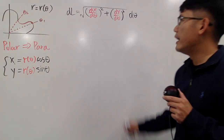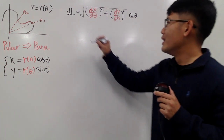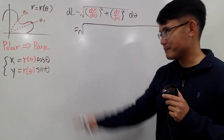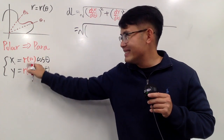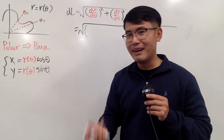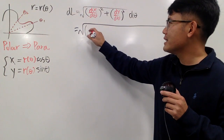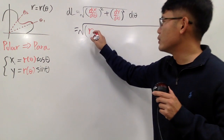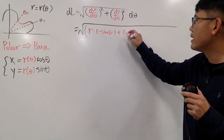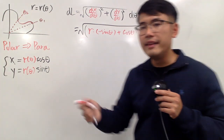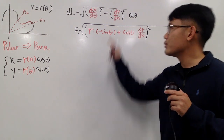I have a separate video on this, so check that out if you haven't already. Now we just have to do the work and find the derivatives. For dx/dθ, we have R(θ) times cosine theta — a product — so we use the product rule. Keep the first function R, multiply by the derivative of the second, which is negative sine theta, then add cosine theta multiplied by the derivative of the first, dR/dθ. We then square that entire expression.